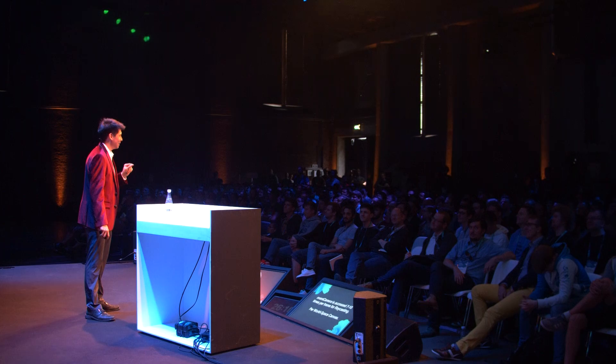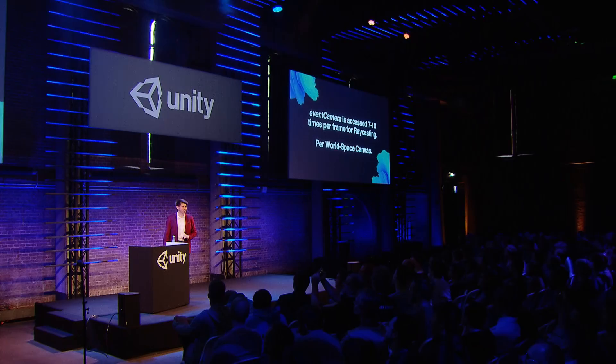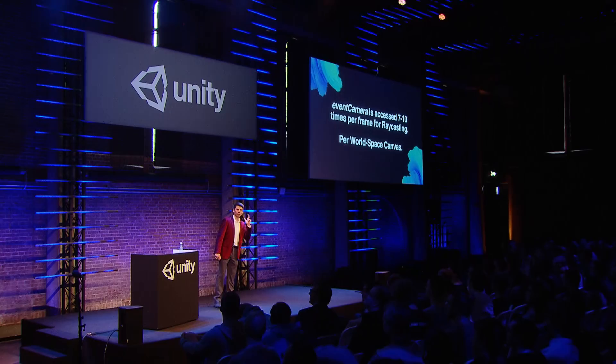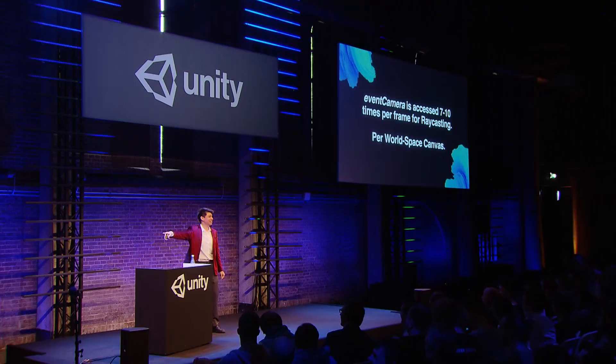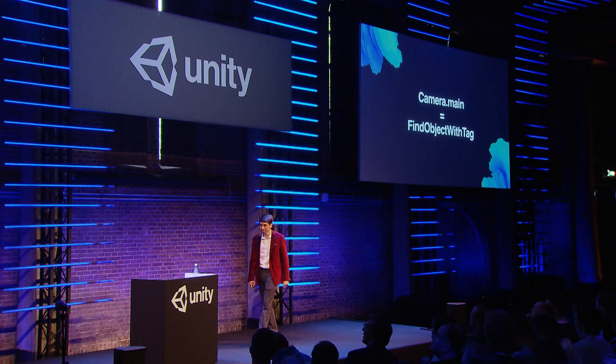Depending on the code path taken, we can access the event camera between 7 and 10 times per frame, per Graphic Raycaster, per world space canvas. And as a reminder: Camera.main is FindObjectWithTag. FindObjectWithTag is not quite as bad as FindObjectByType — we maintain a special index of all tagged items and only iterate over that. But many games end up using tags for design and gameplay purposes, so it's very common to have thousands or more tagged game objects.